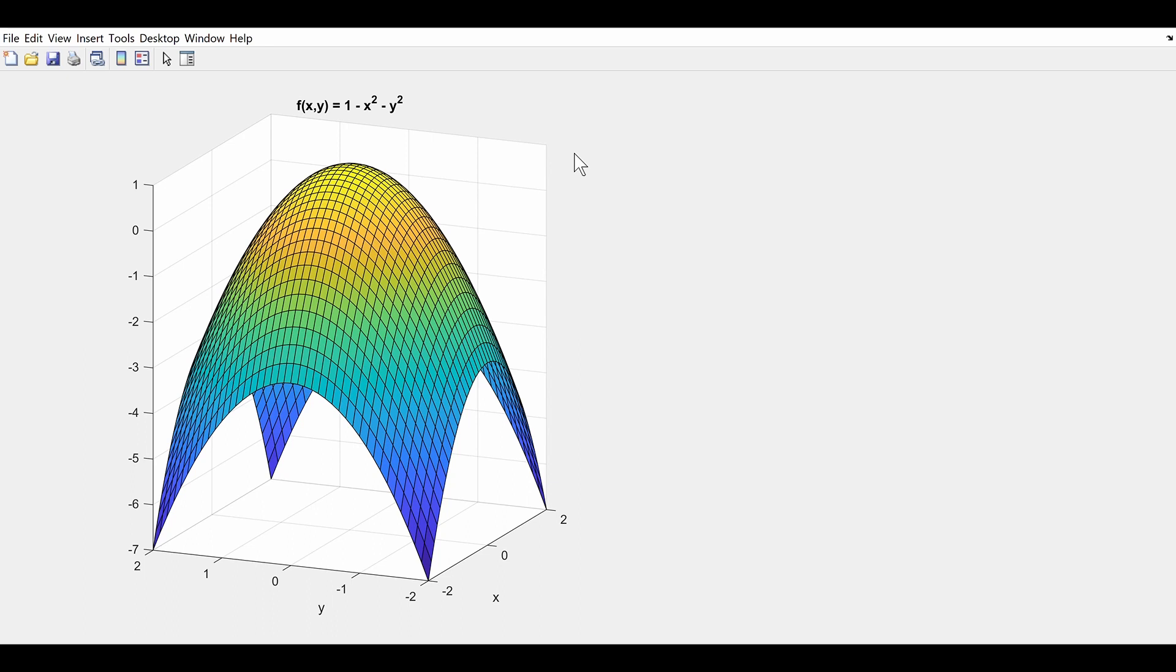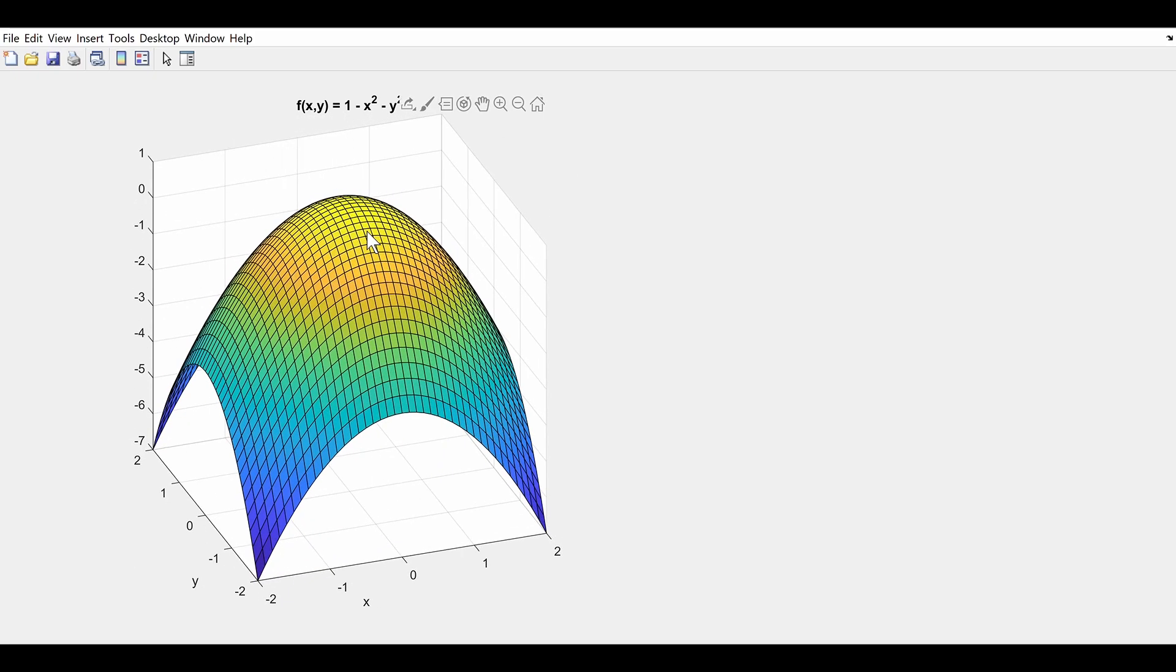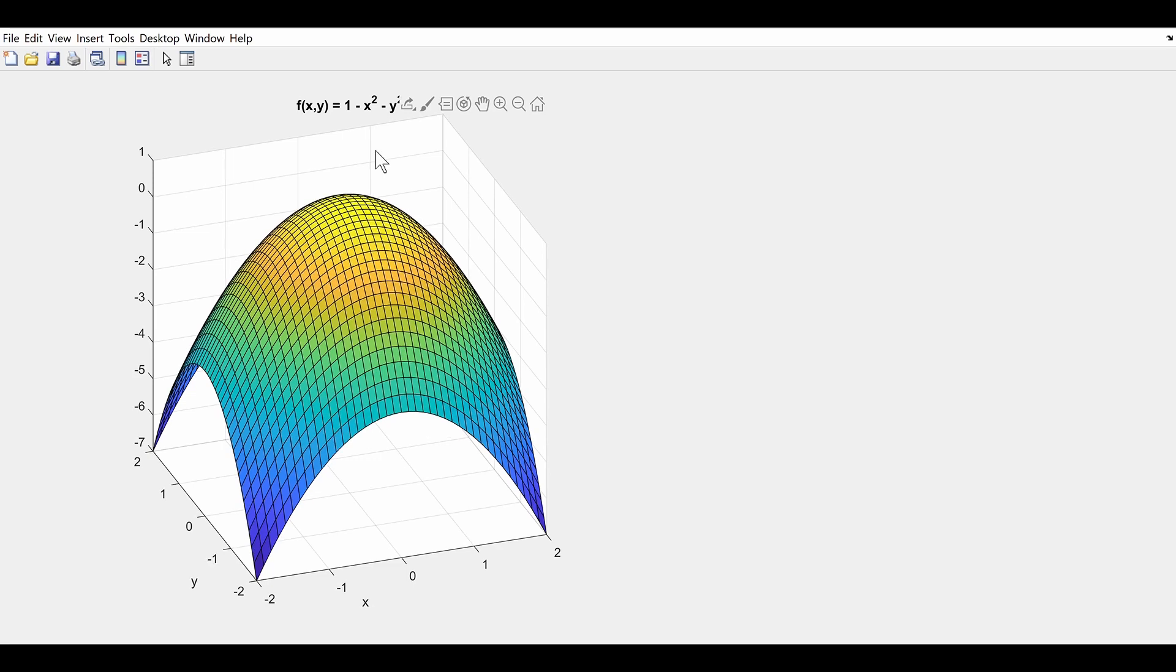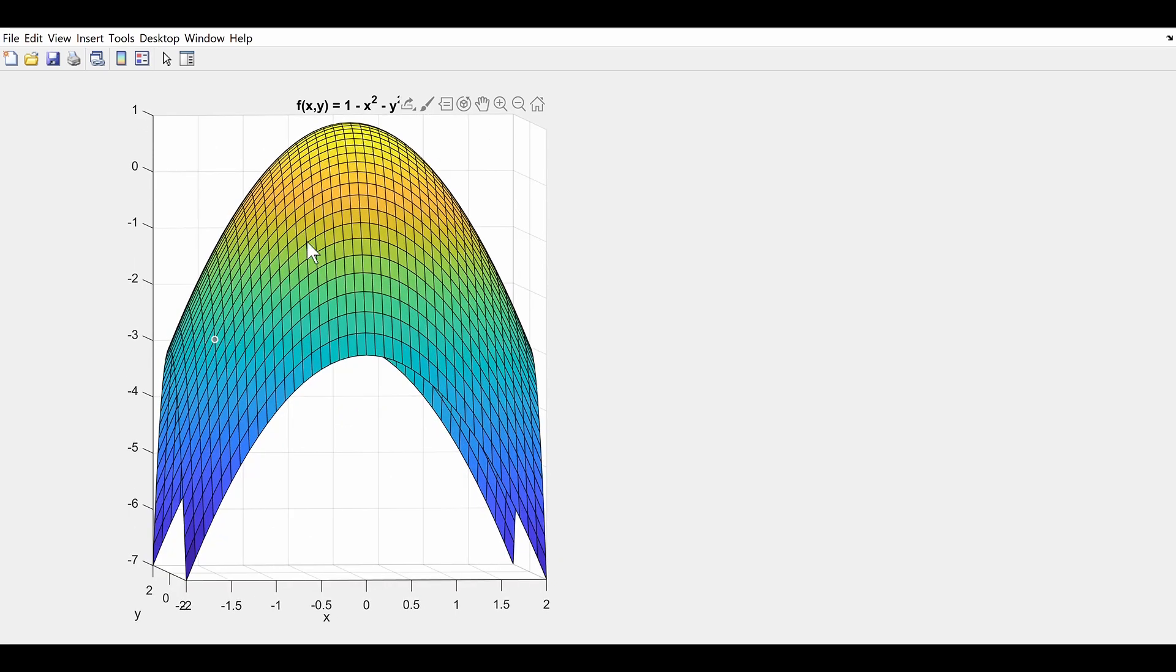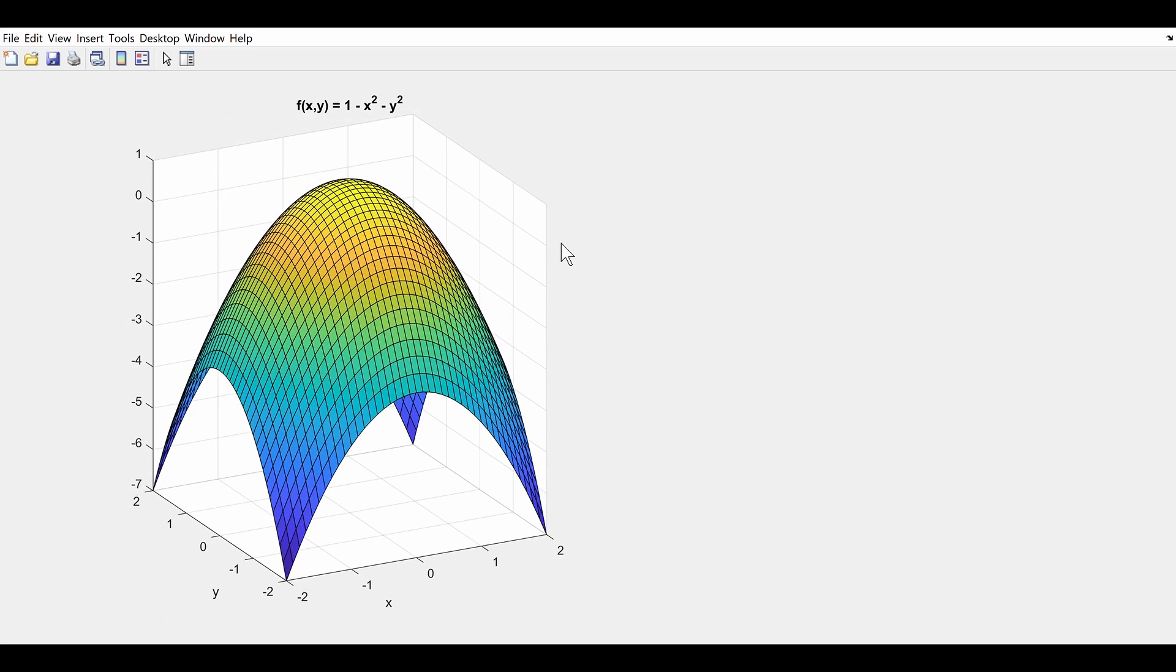Now in order to figure out the partial derivative with respect to x, what we want to do is consider y to be a constant value and then look at what happens as we change the value of x and how that affects the height of our function. So in order to see that better, what I'm going to do is take a slice of this function which we're going to look at on the right.